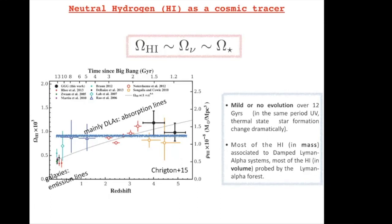What you can see from this plot is that over a wide redshift range — roughly between one and five — there is very little evolution, if any, in Omega_HI. This is curious, because it spans a significant fraction of cosmic time during which many things change dramatically: the star formation rate changes, the UV background changes significantly. Nevertheless, the amount of HI as probed by DLAs remains remarkably constant. Additionally, this Omega_HI density is comparable roughly to the neutrino density Omega_neutrinos and to Omega_star, the stellar density.